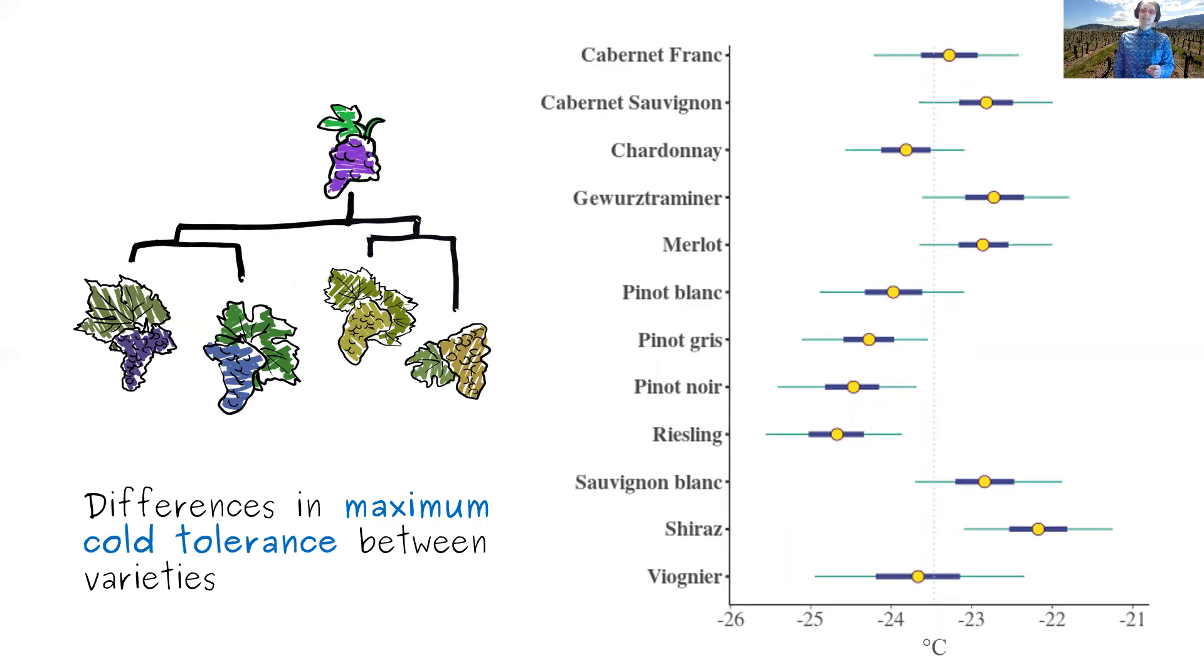But this value differs by variety because the varieties do have different maximum cold tolerances. For example, Riesling here can generally cope with temperatures maybe two or three degrees colder than Shiraz, which is the least cold tolerant. And the good news is these results are in line with our current understanding from the growers of how the vines differ.